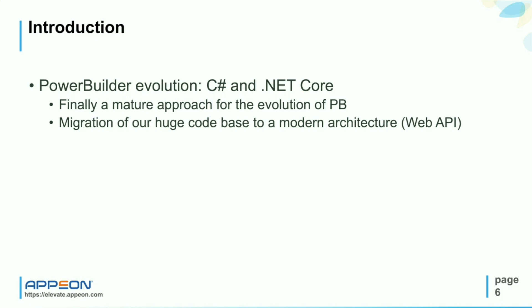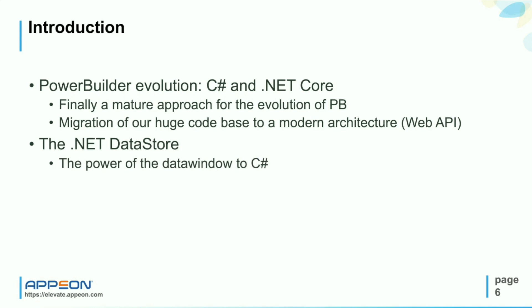The architectural style of the Web API exposes the business logic with a lightweight and expressive approach. The center of this migration is the .NET Datastore. It brings the power of the DataWindow to C-Sharp and enriches the Datastore API with methods that are more natural for .NET. The .NET Datastore is both elegant and easy to use for PowerBuilder programmers, yet it's C-Sharp code and uses the full power of .NET.